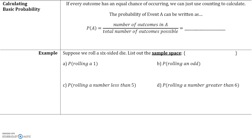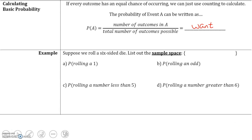Here's how we calculate basic probability. If every outcome has an equal chance of occurring, we can use the following formula: the probability of event A, written as P(A), is the number of outcomes in A divided by the number of total possible outcomes. In other words, the number of times A occurs divided by the total number of possibilities.